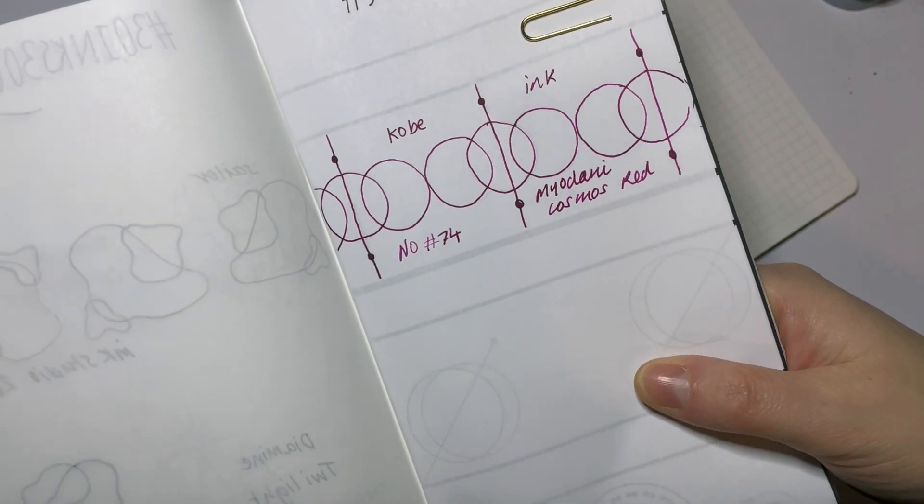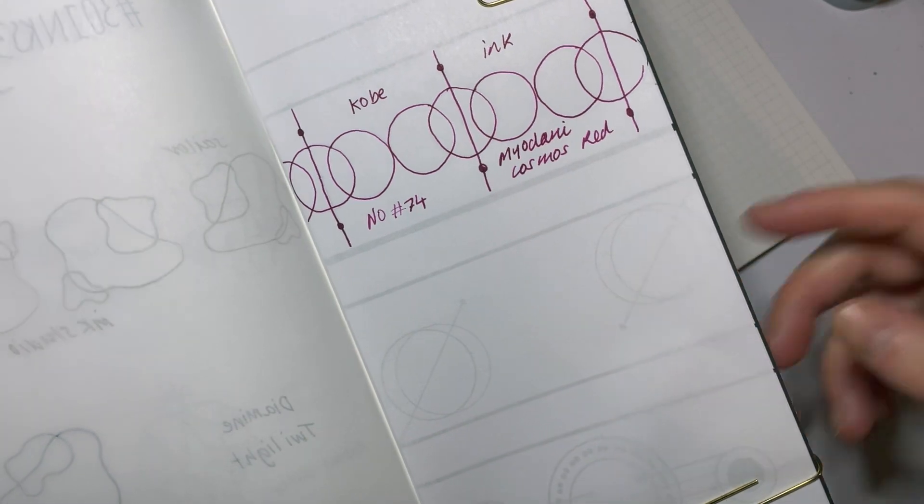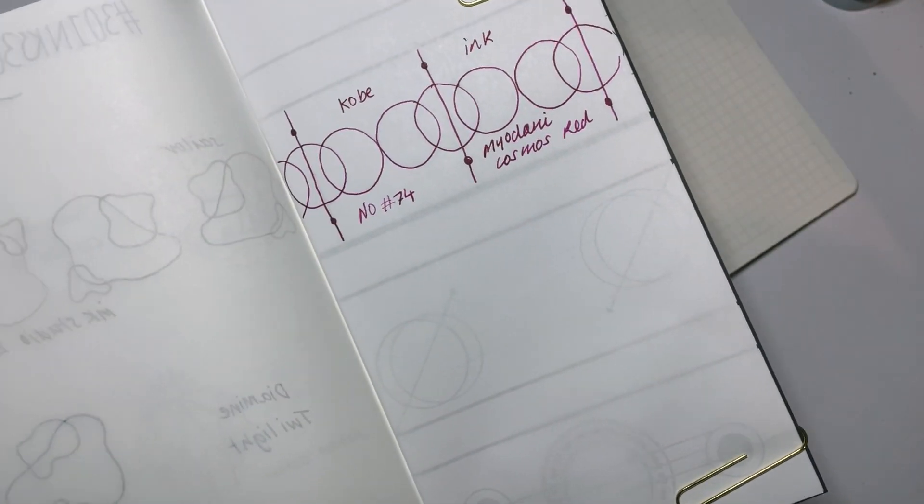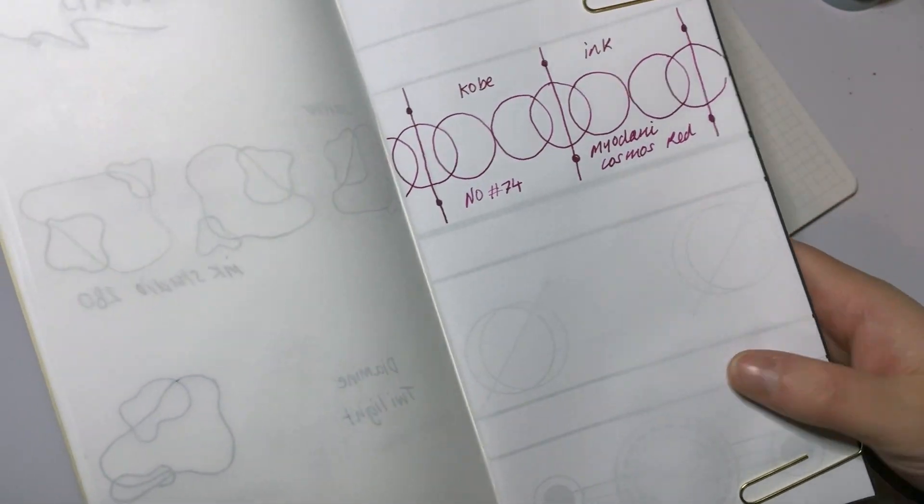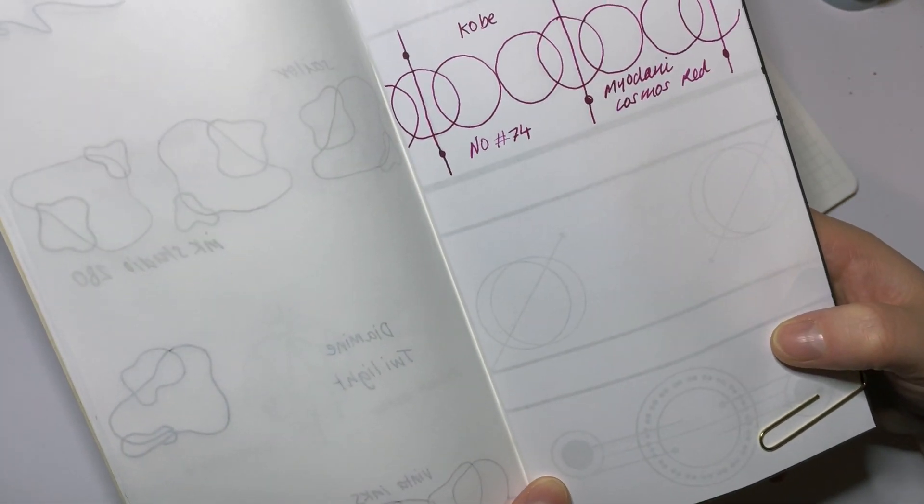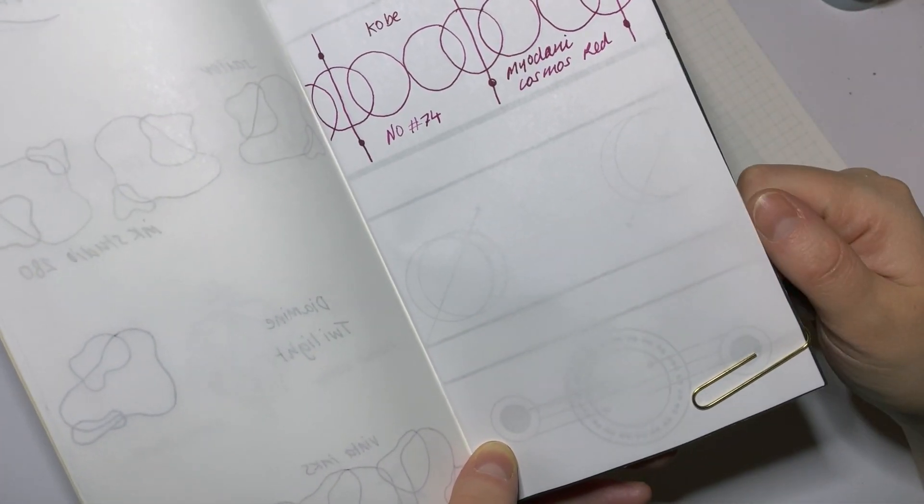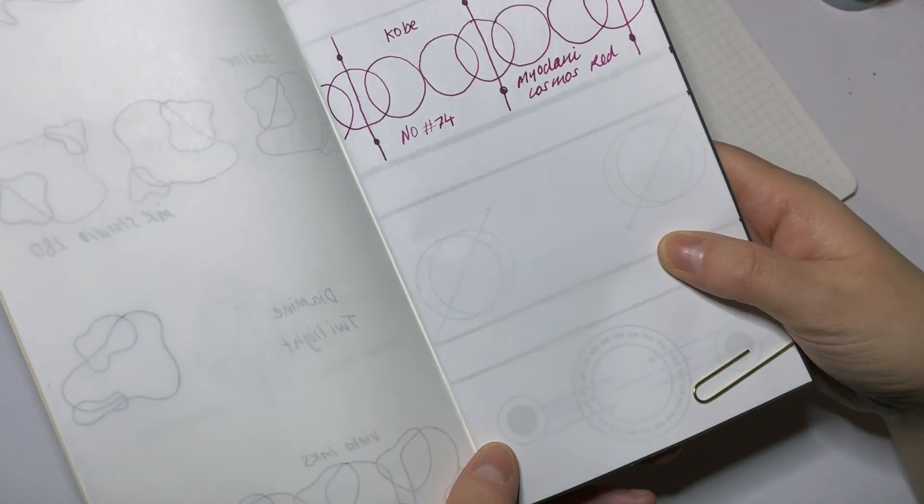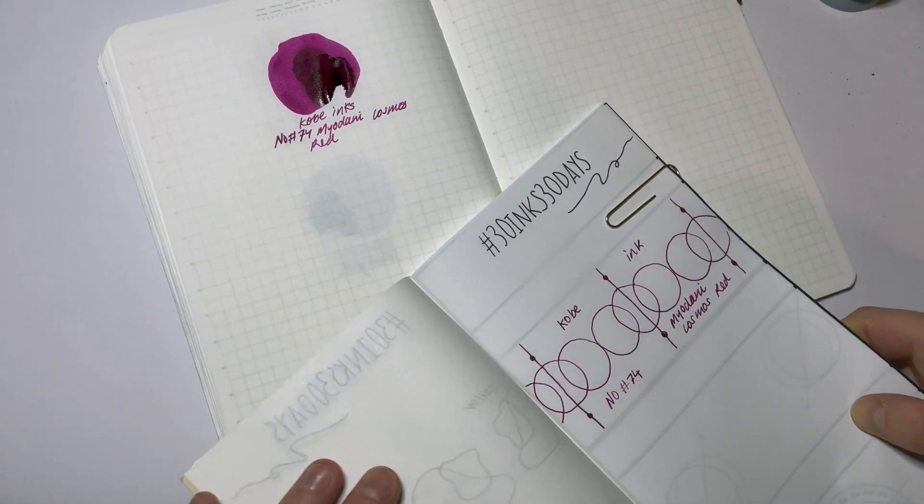So another ink in kind of this cool purpley-pinky world that I'm really enjoying at the moment. This is Kobe Inks number 74 Maiodani Cosmos Red. That was day 19. Tomorrow is day 20, which I think is like - we're on the home stretch, 10 more to go. Whereas maybe 25 is on the home stretch. Anyway, tomorrow's day 20. Let's see what we pick and hopefully it goes nicely because I've had some really nicely themed pages thus far. Awesome, I will see you guys tomorrow. Bye!